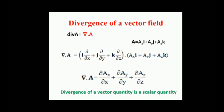+ k·∂/∂z) dot (Ax·i + Ay·j + Az·k), which equals ∂Ax/∂x + ∂Ay/∂y + ∂Az/∂z, where Ax, Ay, and Az are the components of the vector A in the x, y, and z directions respectively. It is to be noted that the divergence of a vector quantity is a scalar quantity.